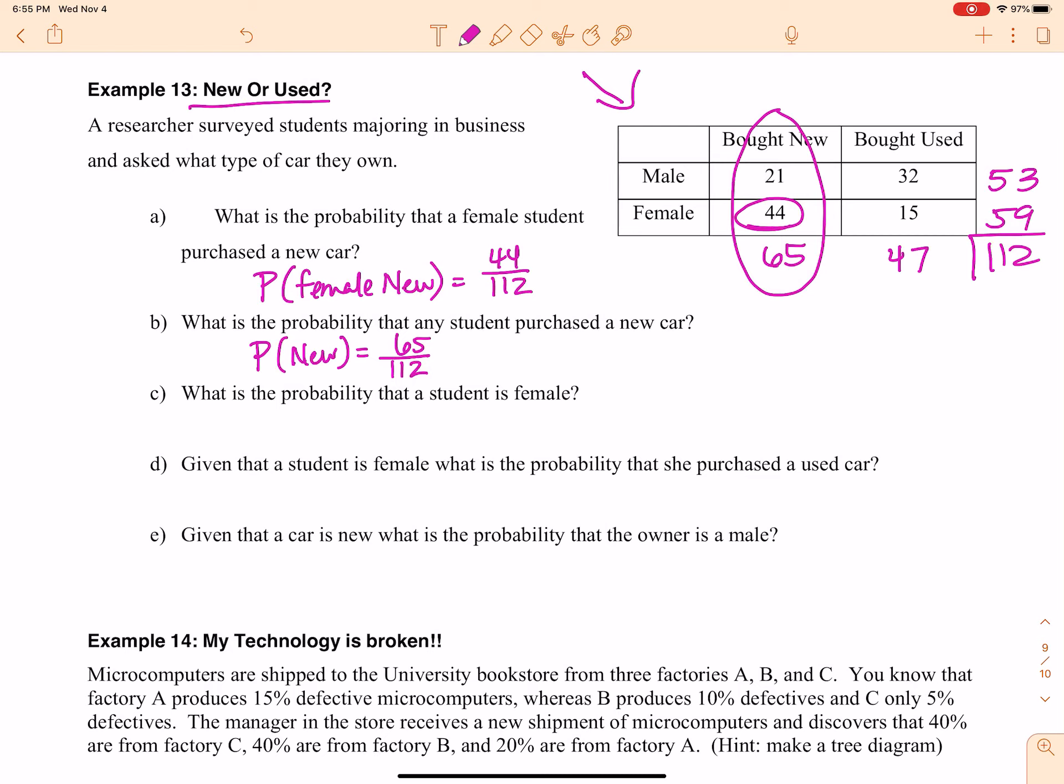Part C, what is the probability that a student is female? So the probability that a student is female, well, the females are, there are 59 of them. So 59 out of 112, beautiful.